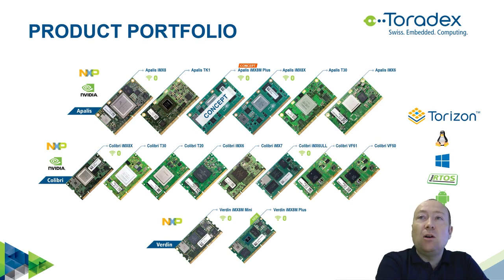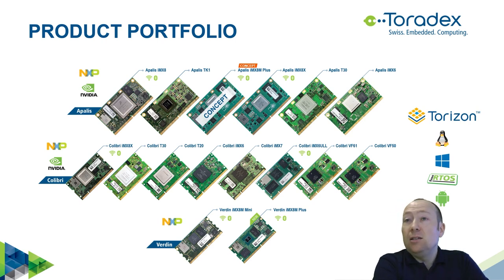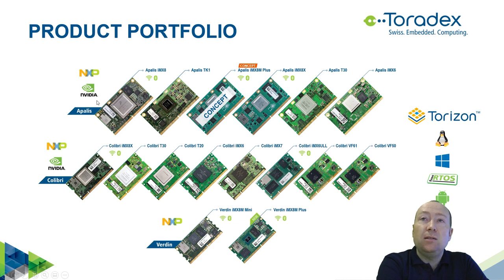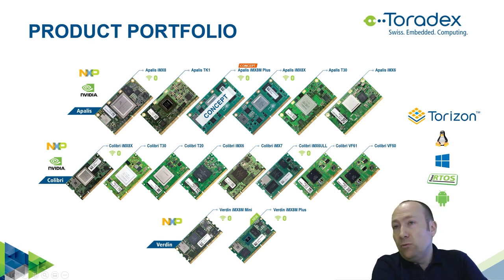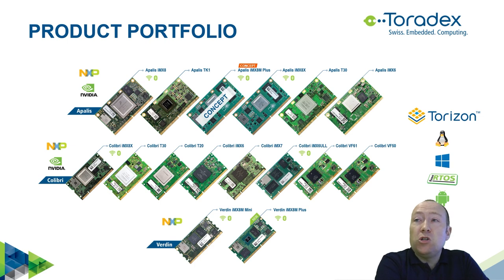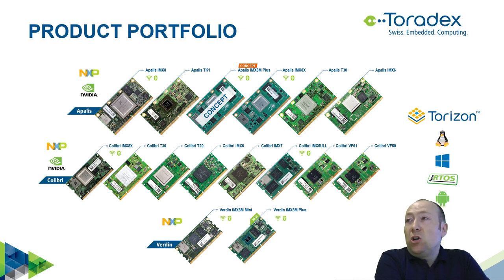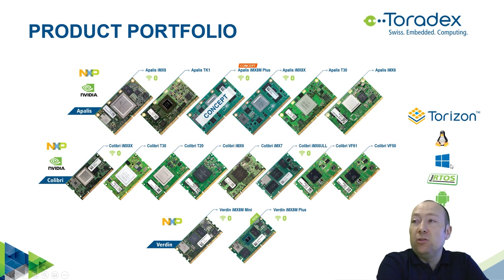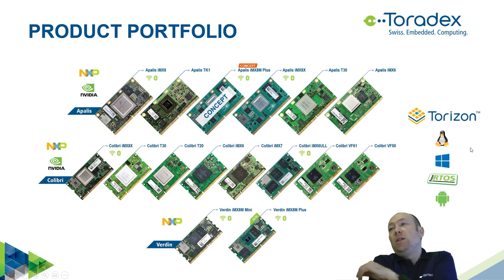Our main business is selling computer modules in three different families: Apalis, Colibri, and our latest, the Verdin family. Within each family, the modules are pin-compatible in their main functions, so you can develop a board for a specific module and later swap it for one with higher performance, lower power consumption, or lower price. The modules also come with software support including a Linux BSP, Windows CE on some modules, FreeRTOS, Android, and our own operating system called Torizon.